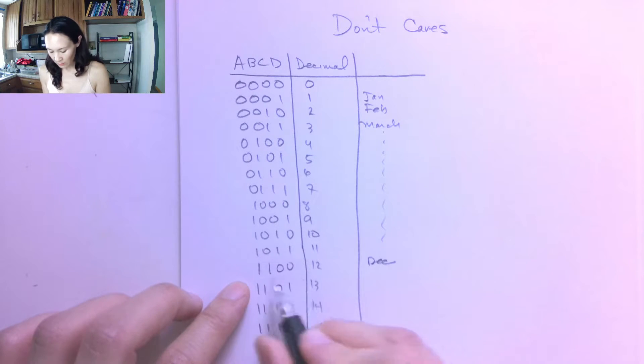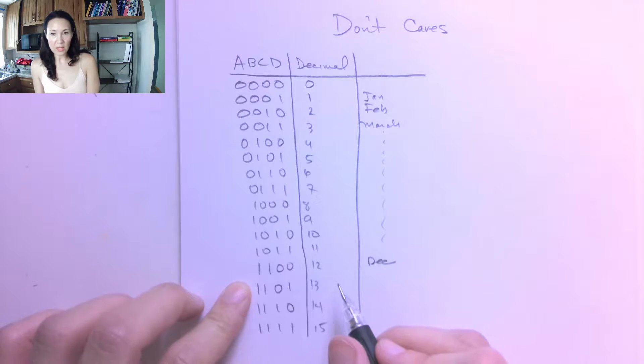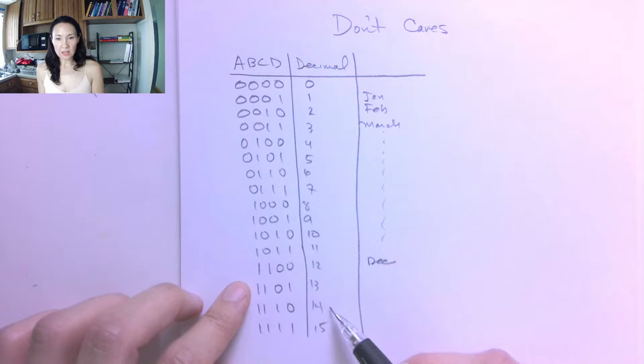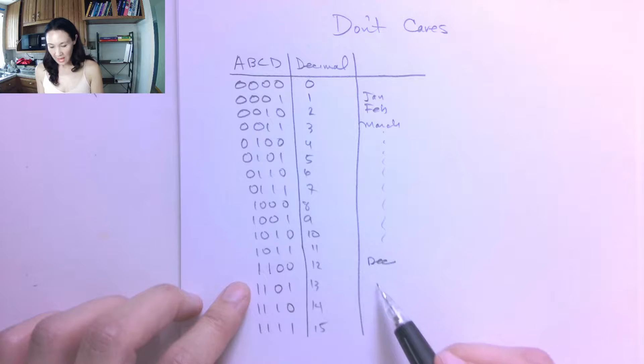So we need to be able to count up to 12. We're definitely going to need 4 inputs because if we only had 3, then we could only count up to 7. But we don't need these 13, 14, 15. There are no months that exist out here. So this output is unspecified.